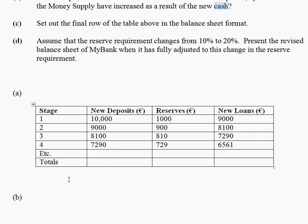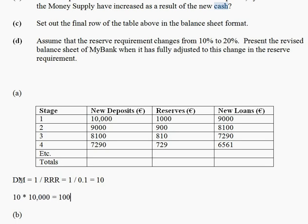The next thing we need to do is work out the totals. In order to work out the totals column, we need to work out the deposit multiplier. The deposit multiplier is 1 divided by the RRR — your required reserve ratio — so 1 divided by 0.1, which gives us a deposit multiplier of 10.